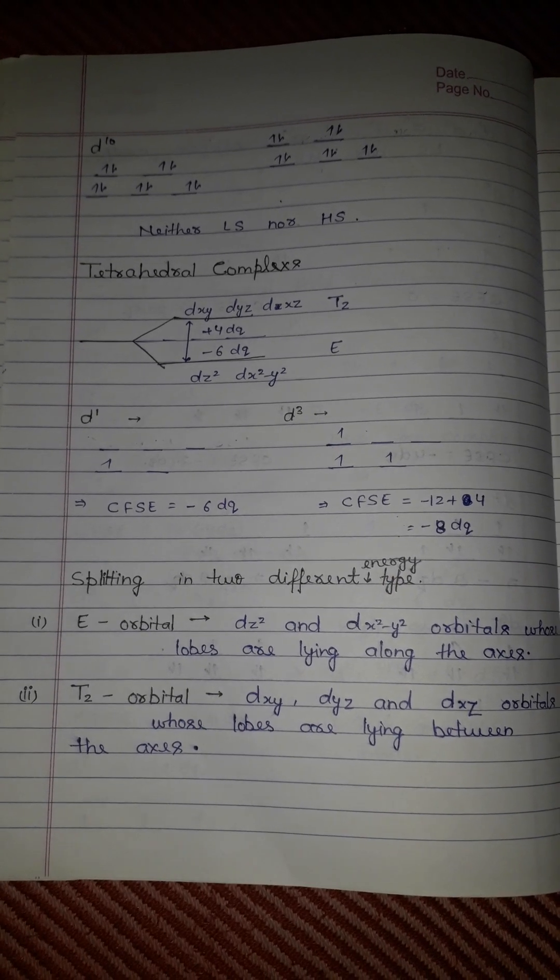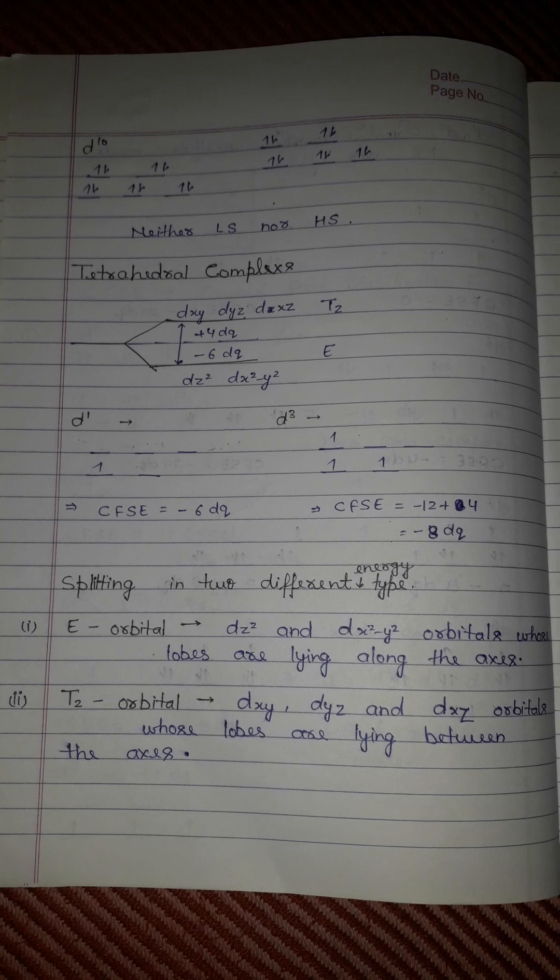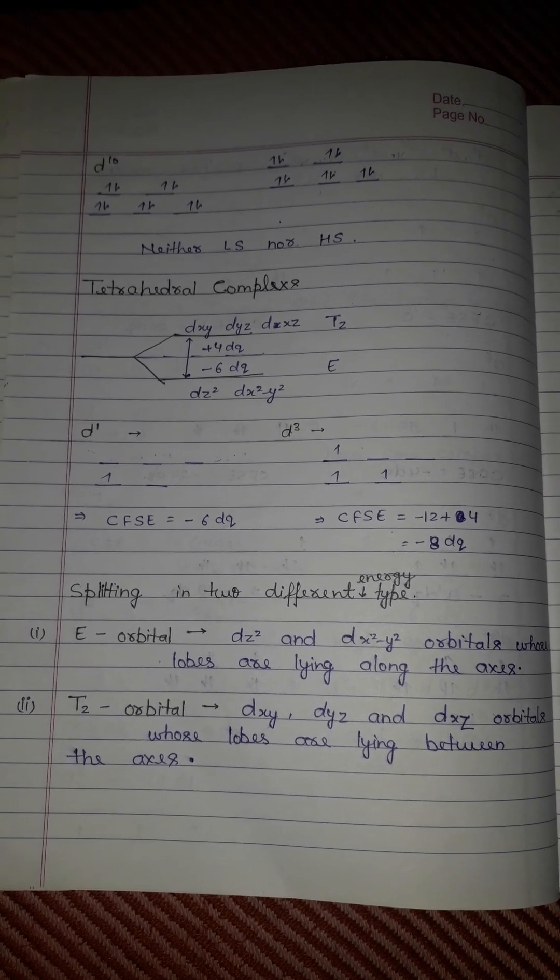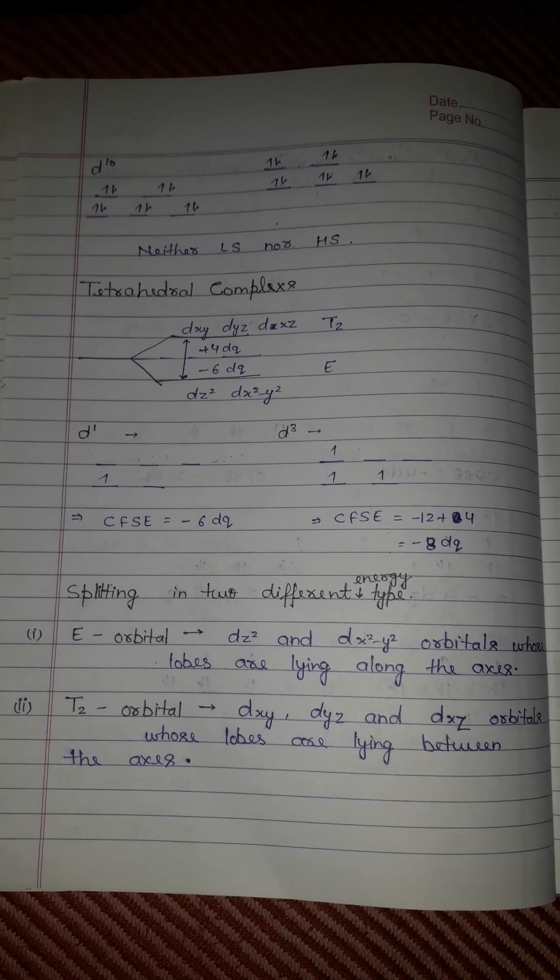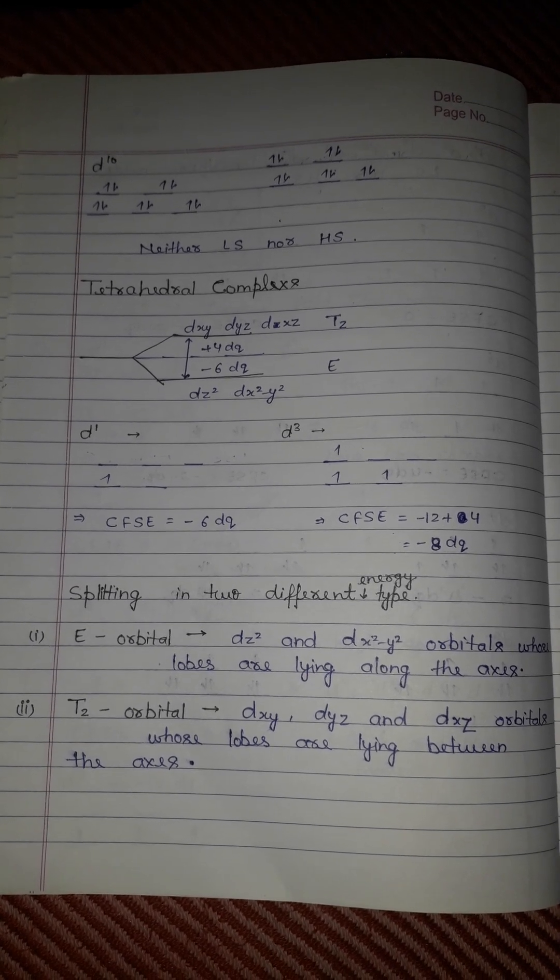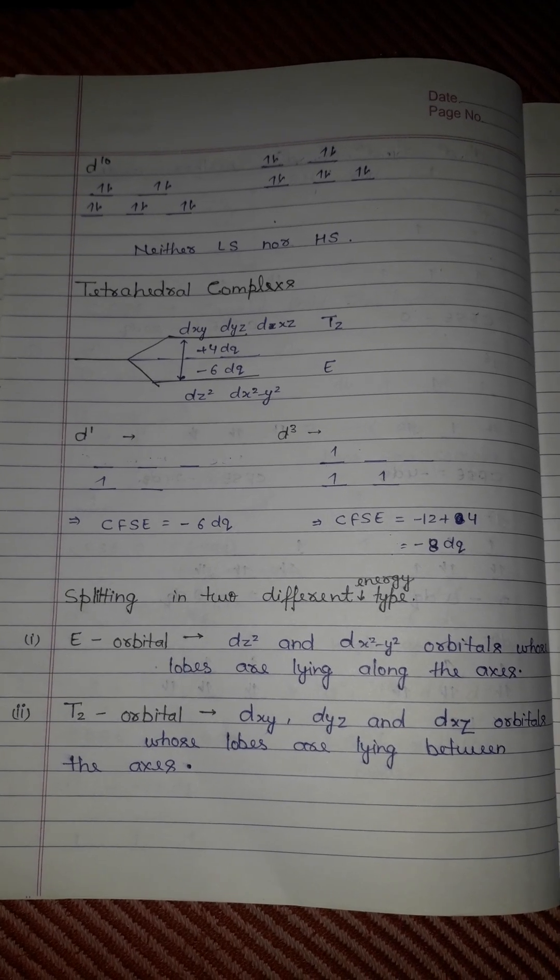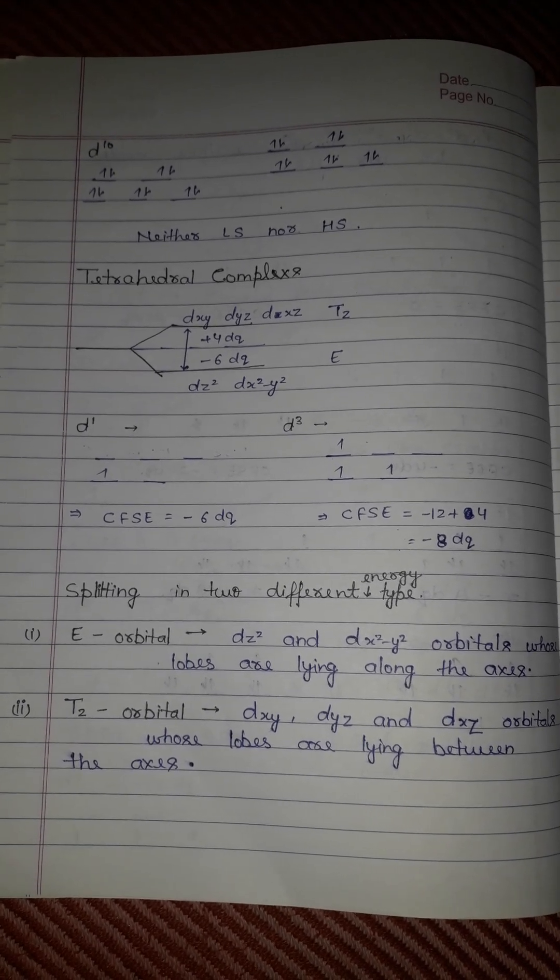In tetrahedral complexes, splitting occurs into two types. The e orbitals (dz² and dx²-y²) have lobes lying along the axes. The t2 orbitals (dxy, dyz, and dxz) have lobes lying between the axes.